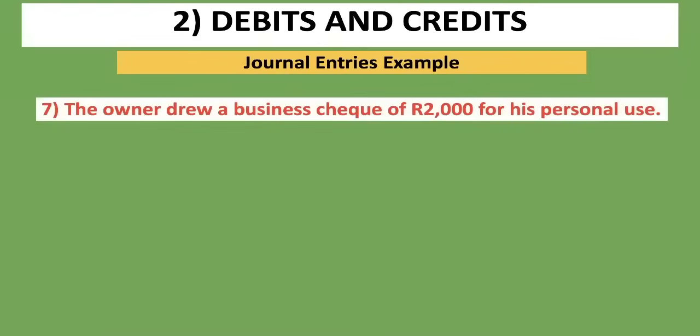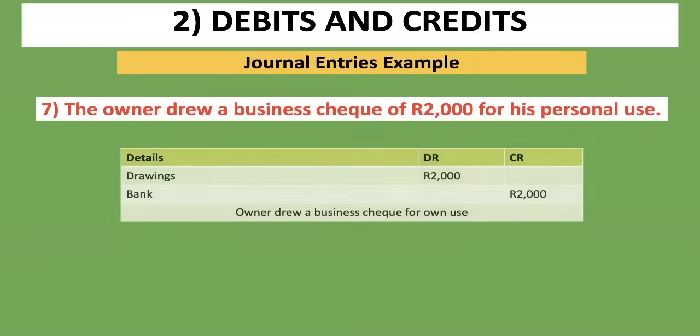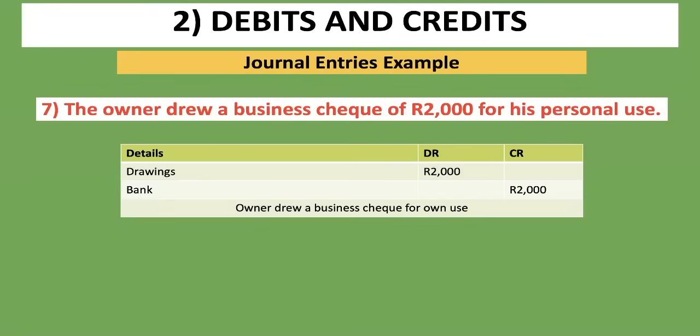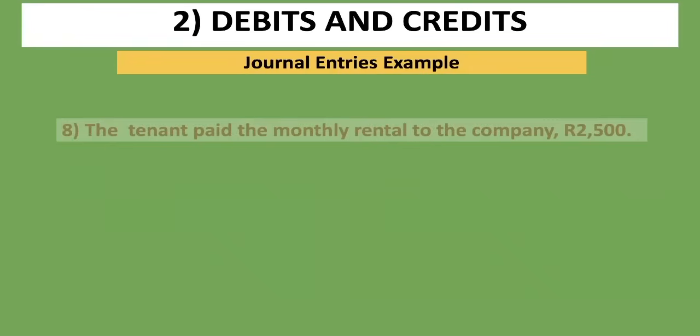Transaction seven: the owner drew a business check of 2,000 rand for personal use. We have Bank — a business check was drawn, so Bank is decreasing and goes on the credit side. The owner taking money for personal use is called Drawings — an equity account that reduces equity and goes on the debit side. Journal entry: Debit Drawings 2,000 rand, Credit Bank 2,000 rand. Narration: owner drew a business check for own use.